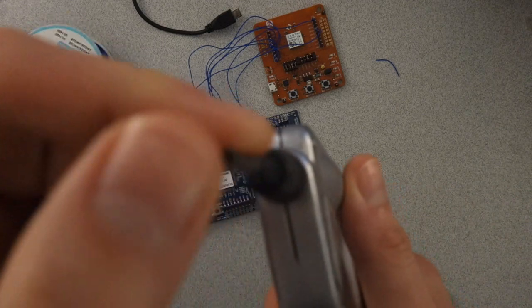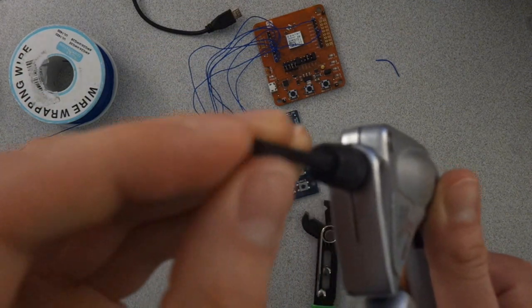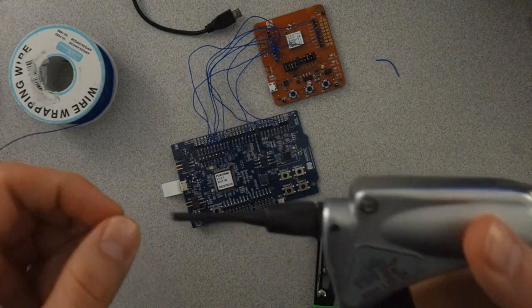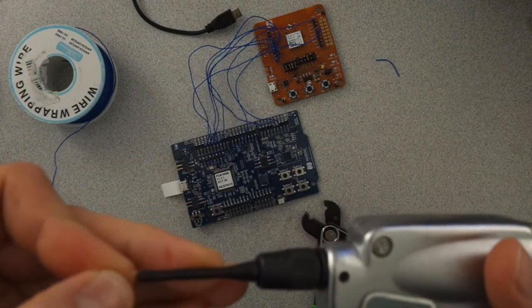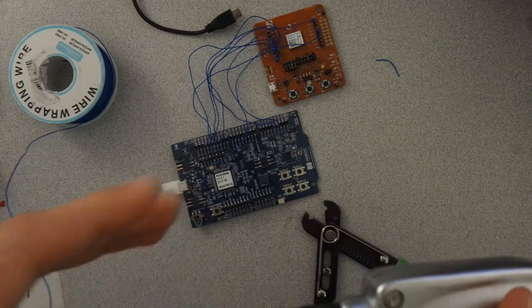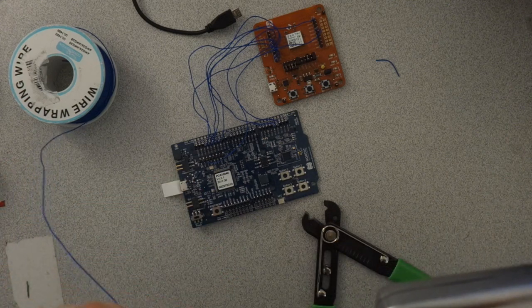There are two holes in here. You might not be able to see it with the camera. There's a bigger hole and a smaller hole. You want to make sure you put it in the smaller hole. That's the one that's actually meant for the wire wrap wire. The bigger hole is actually meant for a header.